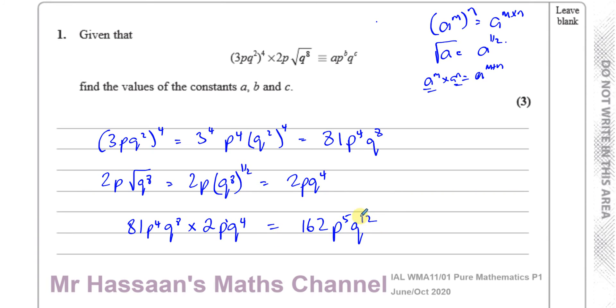And here we have the answer so they say find the values of A, B, and C so you should really write down A equals 162, B is the power of P which is 5, and C which is the power of Q which is 12. So you should really write this down in your answer. Okay, if you leave it in this form they may accept it but according to the instructions of the question they say find the values of the constants A, B, and C so you should write them down. If it said write this in the form of this then it would be okay leaving your answer in this form, but if it says find the values of the constants you should write down the actual values.